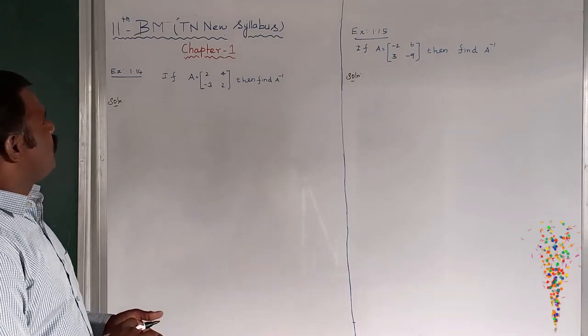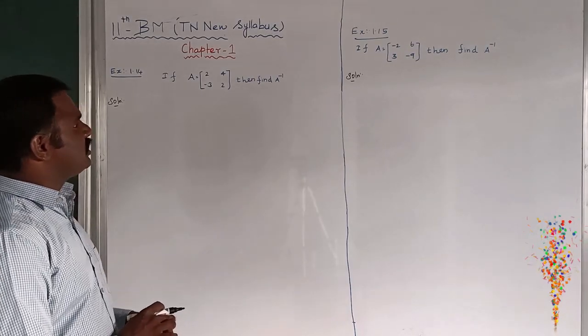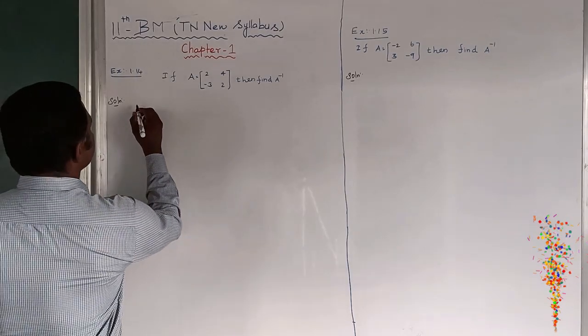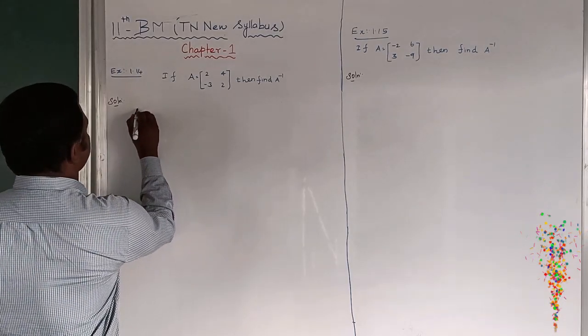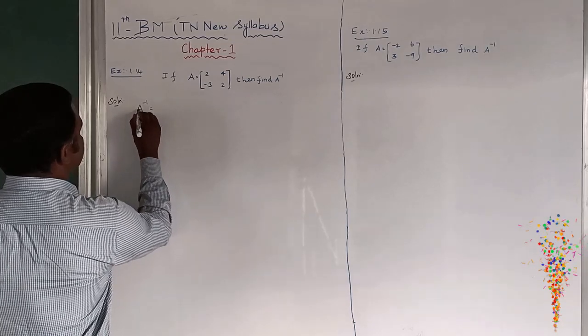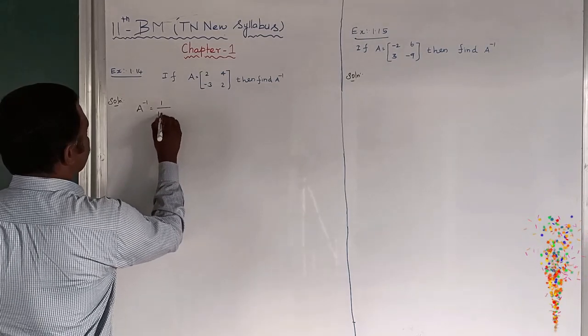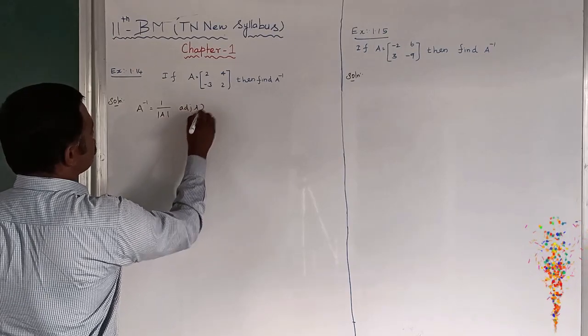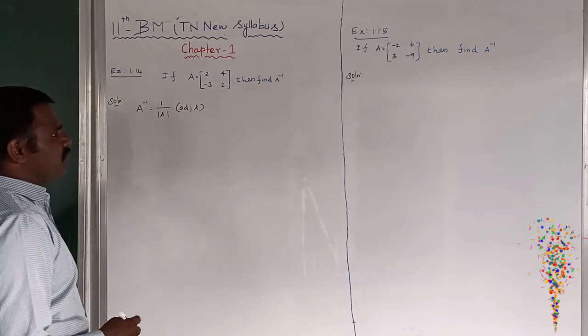Next example, 1.14. If A equal to 2, 4, minus 3, 2, find A inverse. Solution: We should know that A inverse is equal to 1 by modulus of A into adjoint A. This is the formula for A inverse.